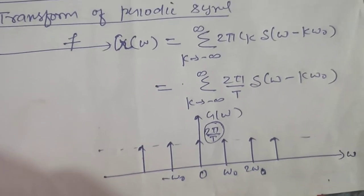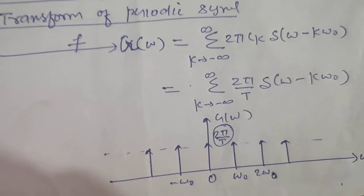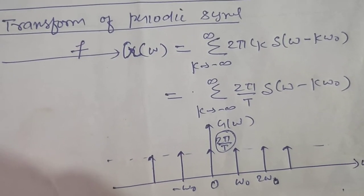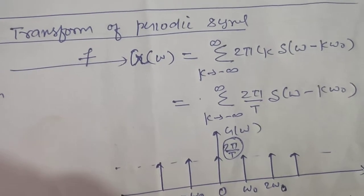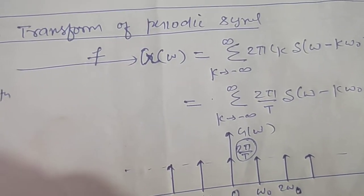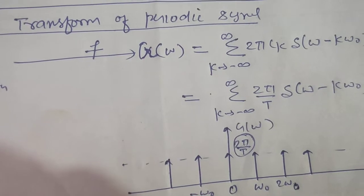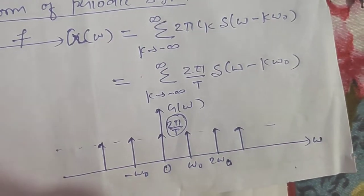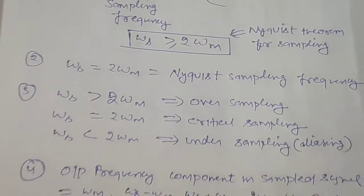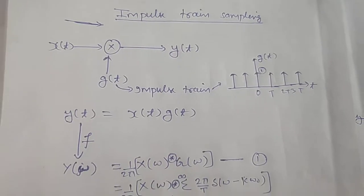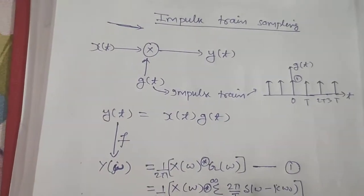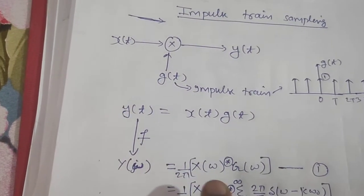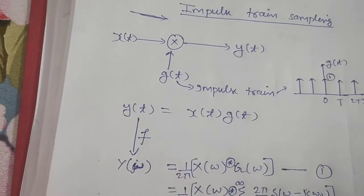Drawing this, we see that G(ω) is another impulse train. So the Fourier transform of an impulse train is another impulse train. The only difference is in the area: the area of the original impulse train was 1, while here the area is 2π over T. Now coming back to the main concept of impulse train sampling — we have seen that Y(ω) equals 1 over 2π times X(ω) convolved with G(ω).